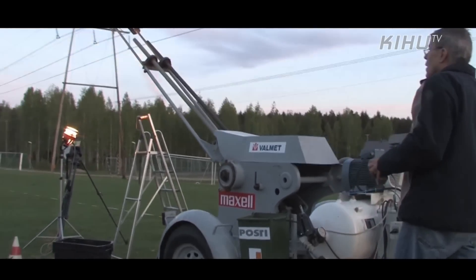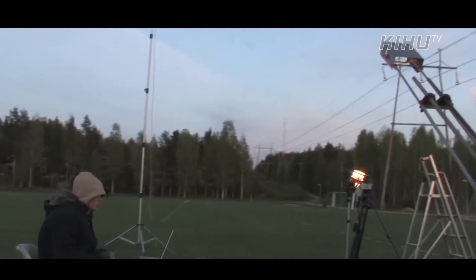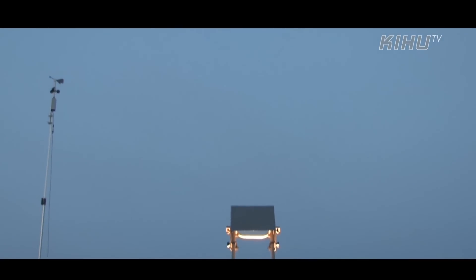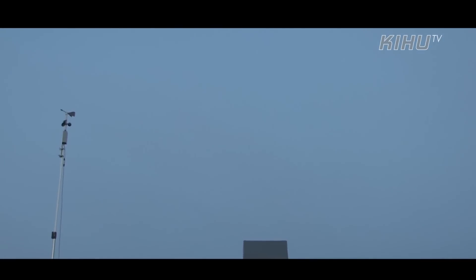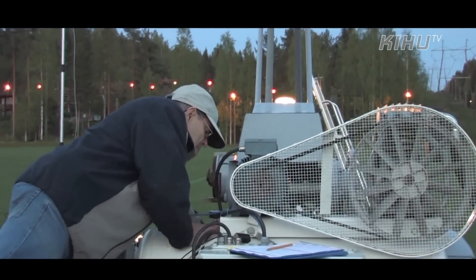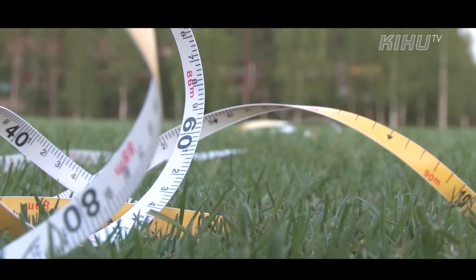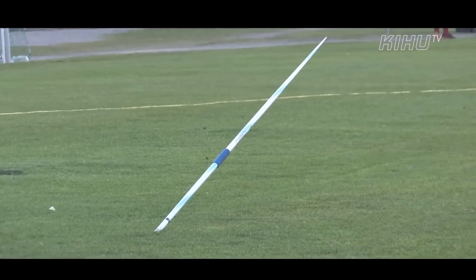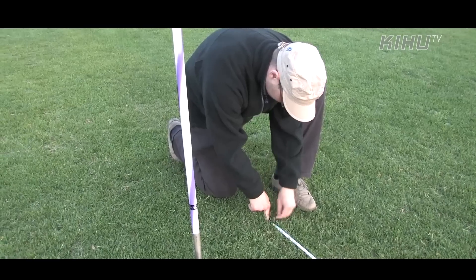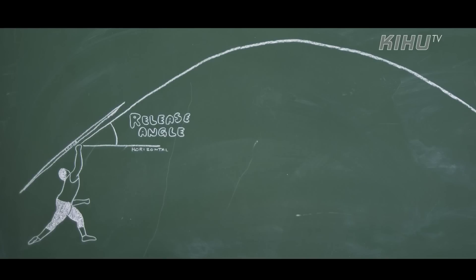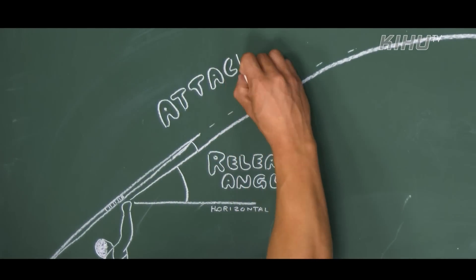Javelin flight with different release speeds and release angles can be tested with a javelin gun. Test results show that, for example, when increasing the release angle from 33 to 36 degrees with a release speed of 28 meters per second, the throwing distance increases by about 2 meters.